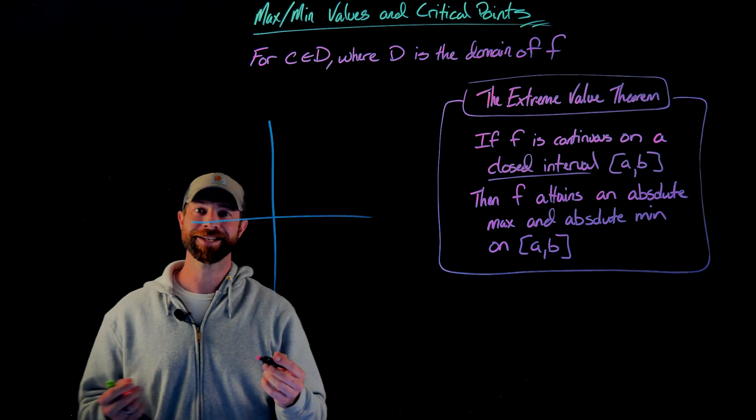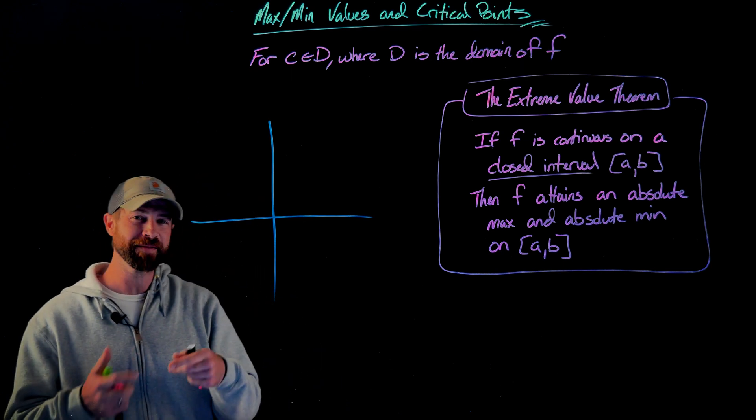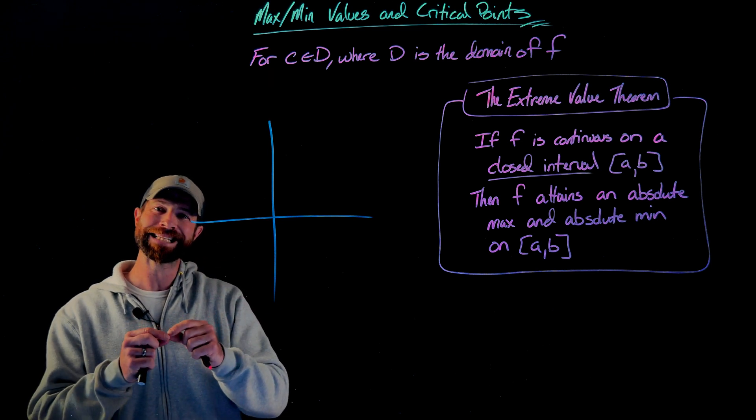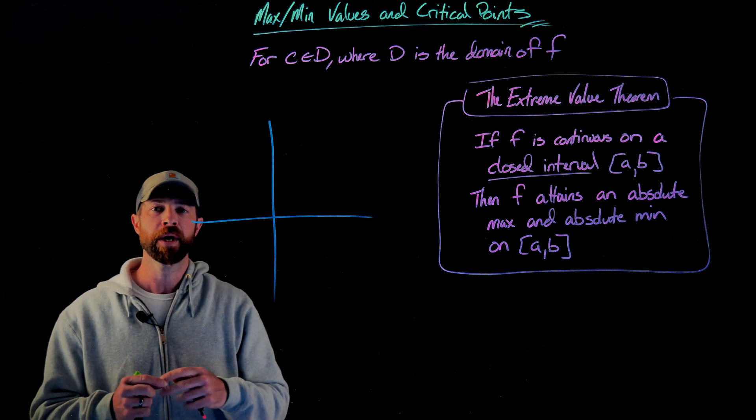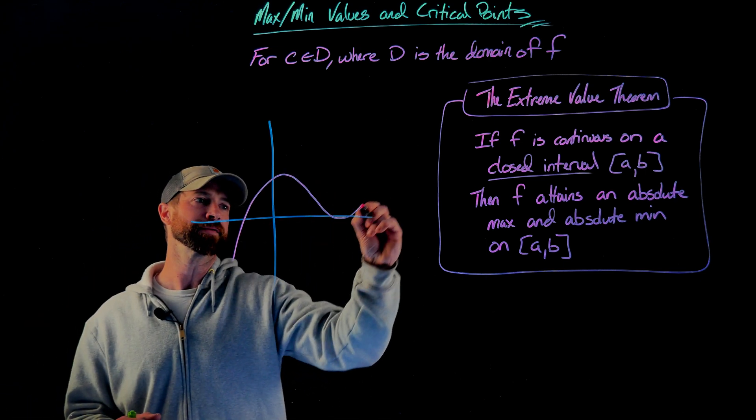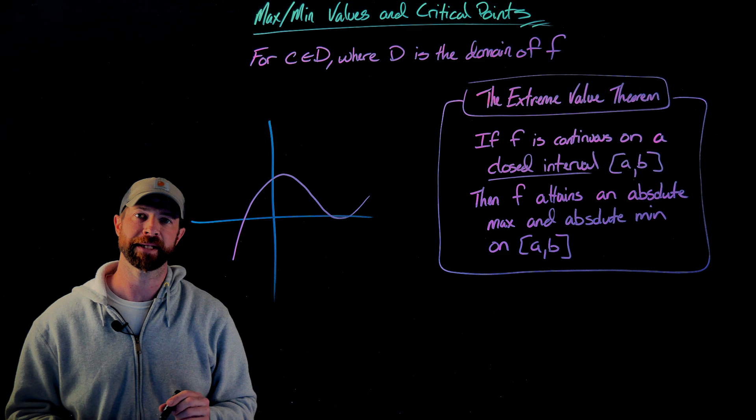Let's take a continuous function. Remember, the definition of a continuous function means that at every point, the output value is exactly the same as the limit value. But graphically speaking, it just means you have these nice, smooth curves.